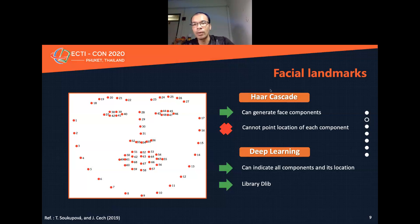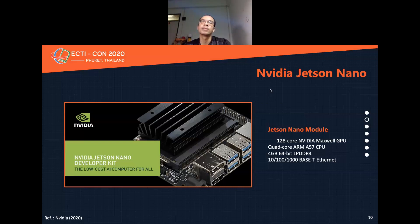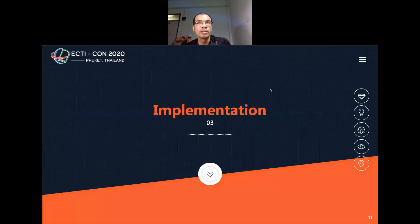Now there is a program called deep learning which indicates all components and their locations by using the dlib library, which shows 86 points on the face. For the hardware, the NVIDIA Jetson Nano has a 128-core NVIDIA Maxwell GPU, a quad-core ARM A57 CPU, 4 GB LPDDR4 RAM, a 10/100/1000 Base Ethernet port, and 3 GB LPDDR4 RAM.